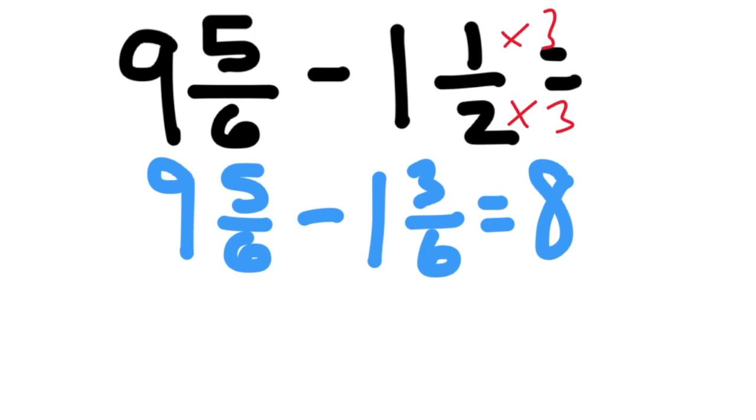So you subtract the whole numbers, 9 minus 1 is 8, and then 5 sixths minus 3 sixths is 2 sixths. 2 sixths can be simplified to 1 third, so the answer is 8 and 1 third.